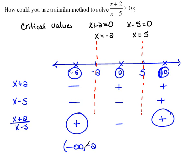Negative infinity always gets a parenthesis, but we have to decide what to do with the negative 2. Negative 2 is going to get a bracket because this says greater than or equal to 0. So because there's equality, negative 2 is an included point.